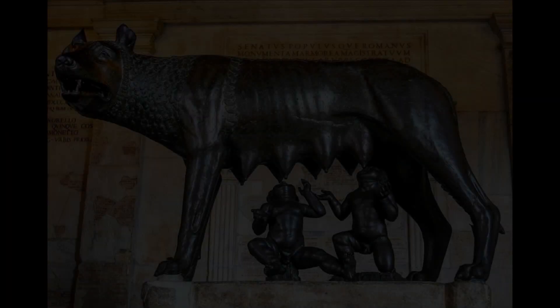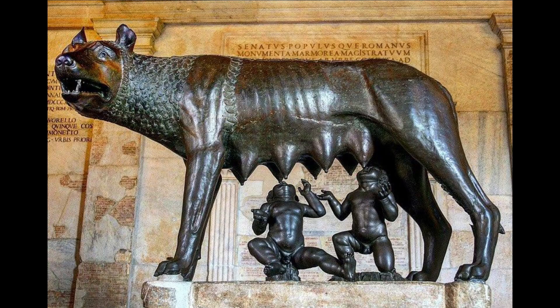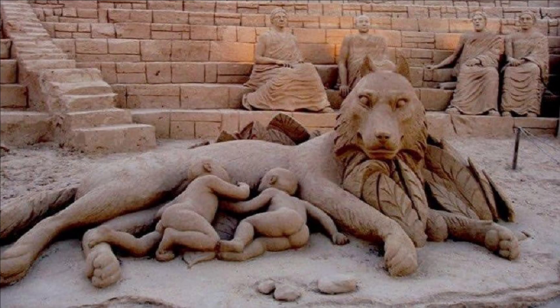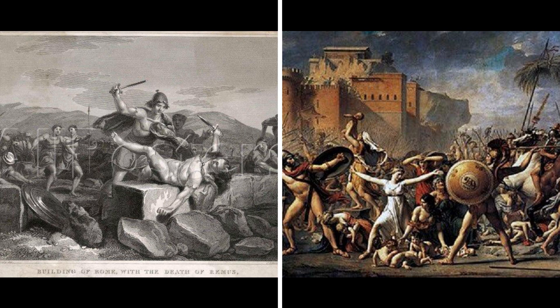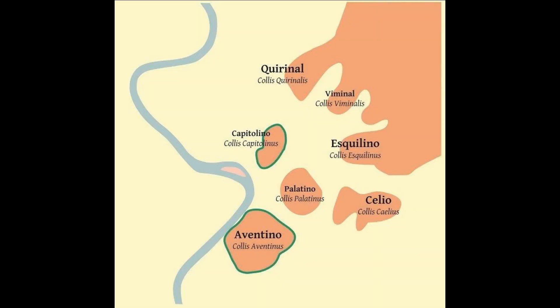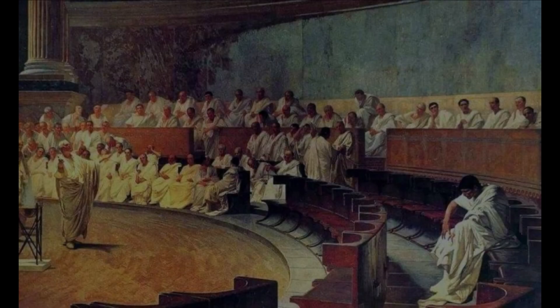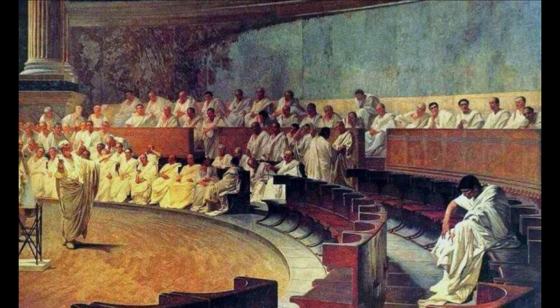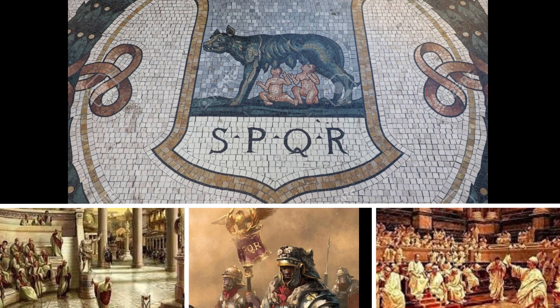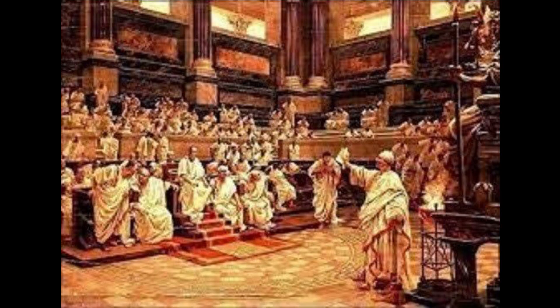Según la tradición romana, este pueblo tiene su origen en los hermanos gemelos Rómulo y Remo, que de bebés fueron amamantados por la loba capitolina. Más tarde, Rómulo, después de matar a Remo, fundó Roma sobre el monte Palatino. Después de años de monarquía, Roma se convirtió en república mandada por su famoso senado, SPQR, Senatus Populusque Romanorum, lo que viene a significar el senado y el pueblo romano.